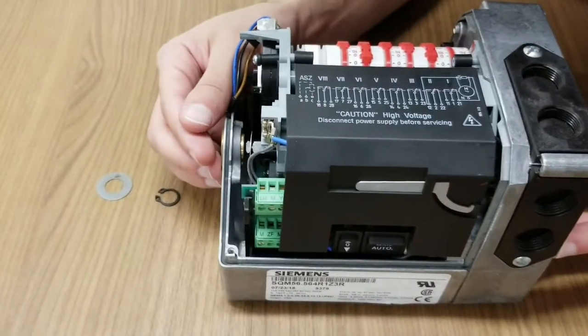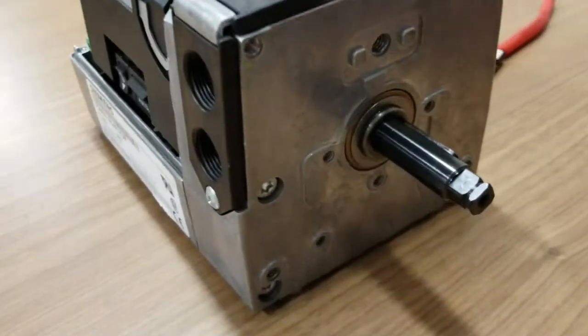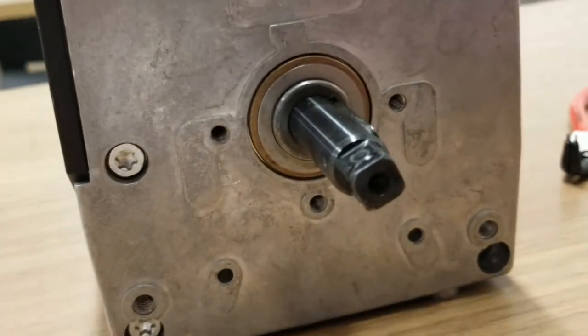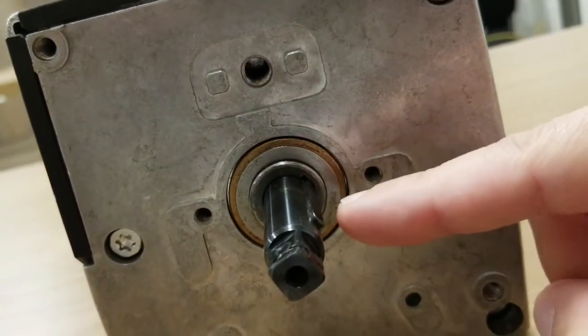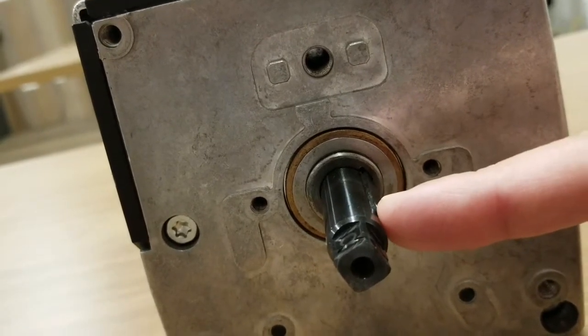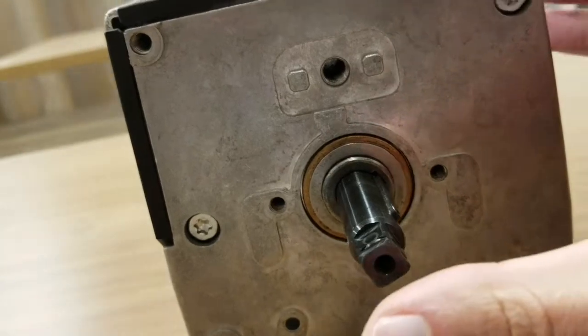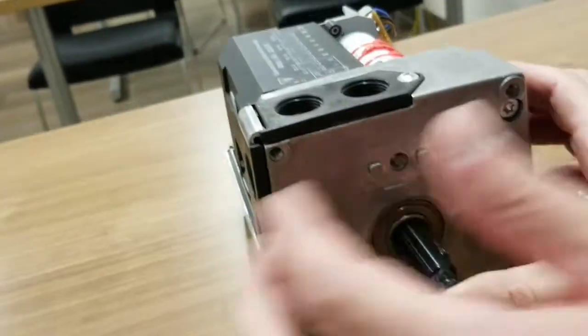Once the washer is on the shaft, we're going to push in the shaft the rest of the way on the actuator. One thing to keep in mind, though, is this key needs to line up with this keyhole. So the key on the shaft needs to line up with the keyhole on the actuator, like so. And I just push it in the rest of the way.